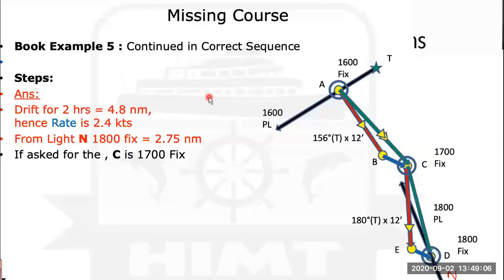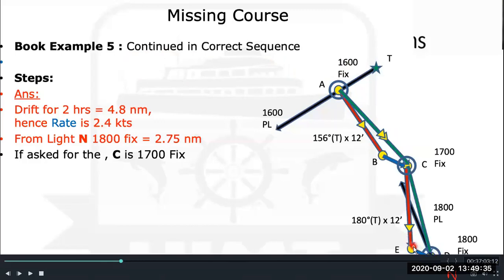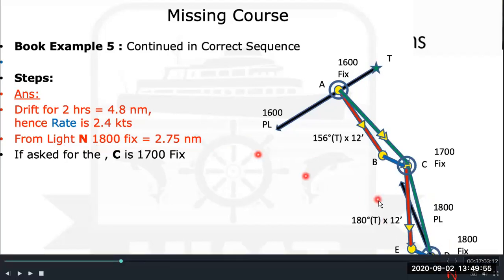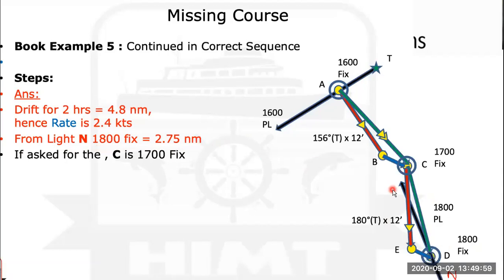When writing the answer, always put the correct sequence. The initial bearing fix at 1600 was 070 degrees. The ship sailed 156 degrees for 12 miles; the current was 110 degrees and the rate measured is 2.4 knots. We got the course made good, reaching the 1800 fix. The drift for two hours is 4.8 nautical miles, so the rate is 2.4 knots, and the 1800 fix is 2.7 nautical miles from light N.